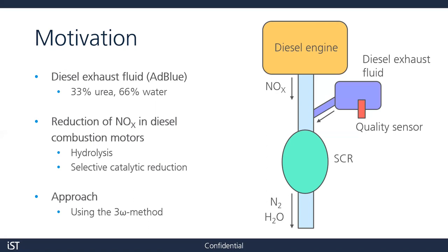This ammonia reacts with the nitrogen oxide to form nitrogen and water by the so-called selective catalytic reduction. However, the correct urea concentration in water of the diesel exhaust fluid is crucial for this reduction. The wrong concentration can break the selective catalytic reduction and no conversion of the harmful nitrogen oxides takes place. Therefore, it is also crucial to monitor the quality of the diesel exhaust fluid, and in this talk we will present a possibility to do this quality monitoring by the three omega method.